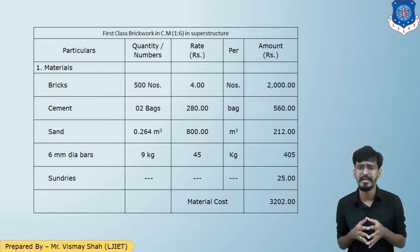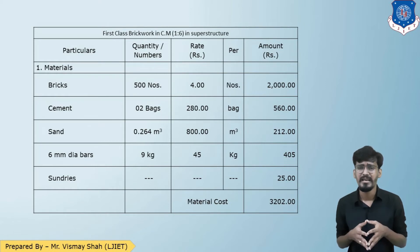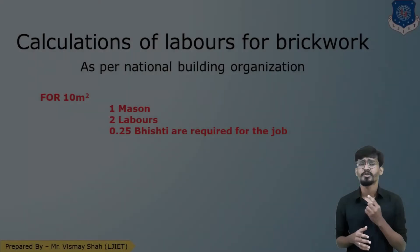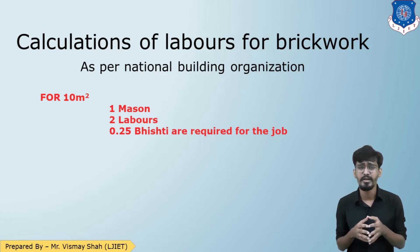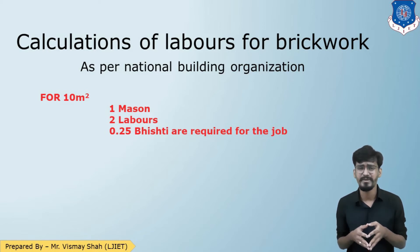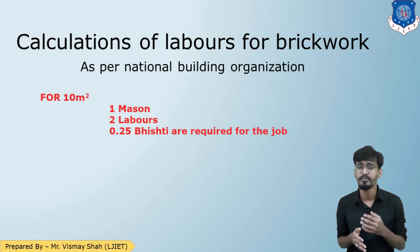The total material cost including sundries is Rs. 3,202. Now let us look at the labor component. As per the National Building Organization, for 10 square meter of partition work, 1 mason, 2 labors, and 0.25 Bhisti is required to complete the job. We can directly use these figures in the labor cost table.